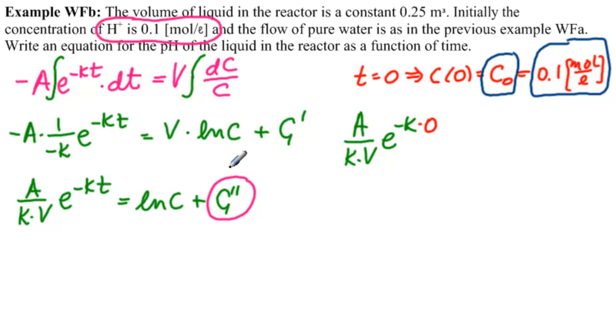That means that we have A over kV times e to the minus k times 0, t equal to 0, equals ln of C of 0 plus C double-prime, which we're solving for. So C double-prime is A over kV minus ln of C0. This is our initial condition.